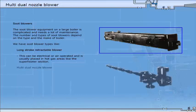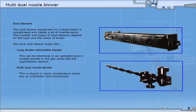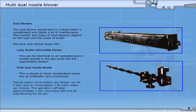The multi-dual nozzle blower is placed in lower temperature areas like air preheater and economiser. Typical steam consumption per blower can be 2 kilos per second and air consumption 130 cubic meters per minute. The operation will take approximately one minute, but there will only be soot blowing for 20 seconds.